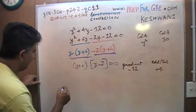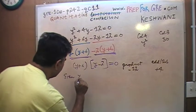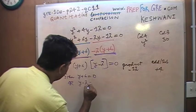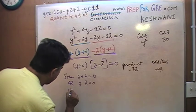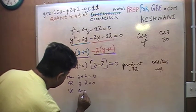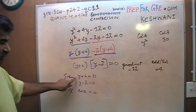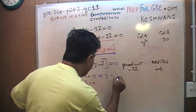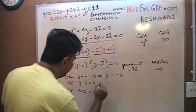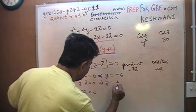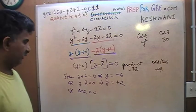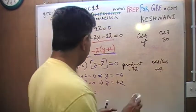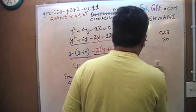That tells me, since the whole thing has to be 0, that either y plus 6 is equal to 0, or y minus 2 is equal to 0, or both are equal to 0. If y plus 6 equals 0, that implies y must be negative 6. If y minus 2 equals 0, that implies y must be positive 2. Those are the two possibilities.